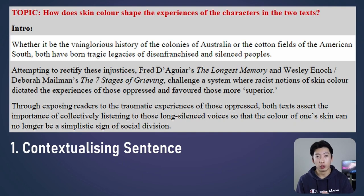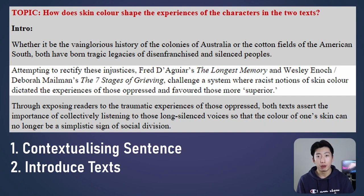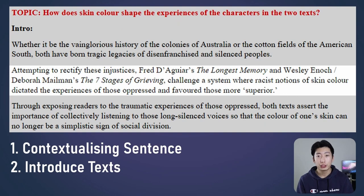The next sentence is where you introduce your texts and broadly speaking what their purpose is. In this case, I say: 'attempting to rectify these injustices, Fred de Gua's The Longest Memory and Wesley Enoch and Deborah Mailman's The Seven Stages of Grieving challenge a system where racist notions of skin color dictated the experiences of those oppressed and favored those more superior.' Note that this sentence links with the topic because it shares many of the same keywords — in this case, skin color and experiences. Make sure in the introduction that you have the keywords of the topic somewhere, as this allows you to directly answer the topic, which is extremely important.